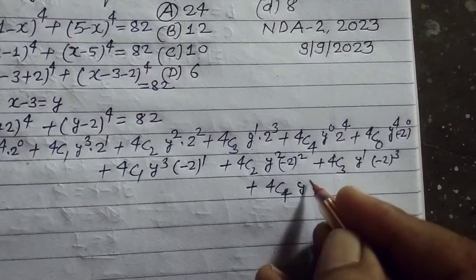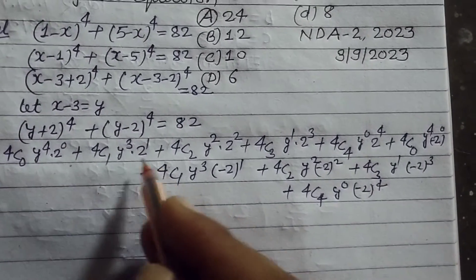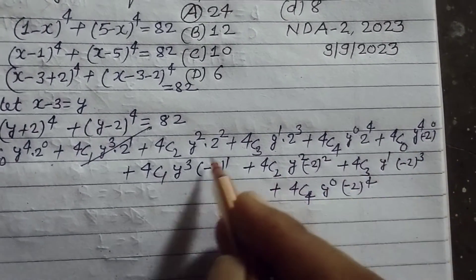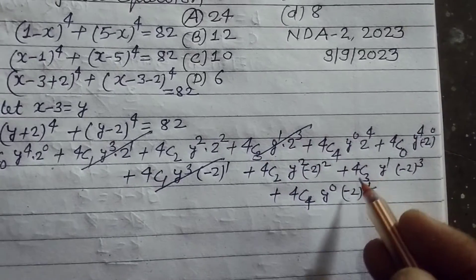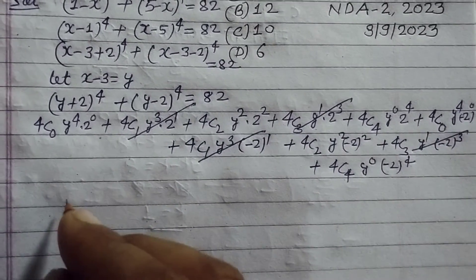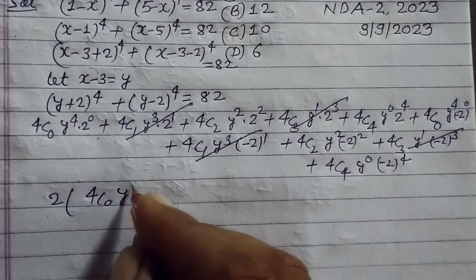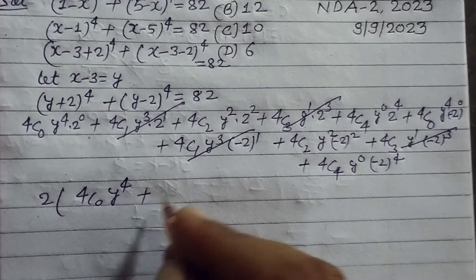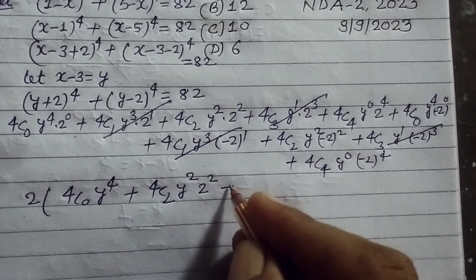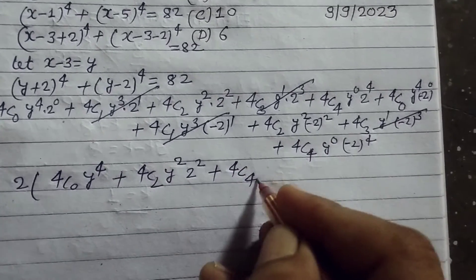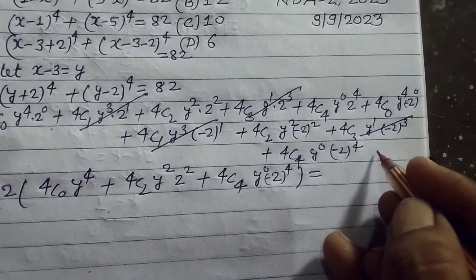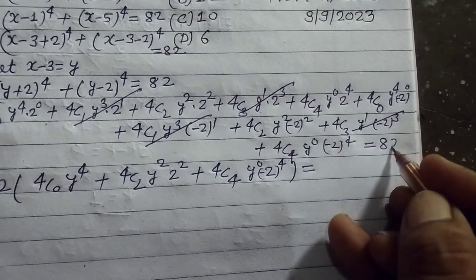After expansion, all odd terms cancel out. We are left with only the even terms: 2 times (4C0·y⁴ plus 4C2·y²·2² plus 4C4·2⁴) equal to 82.